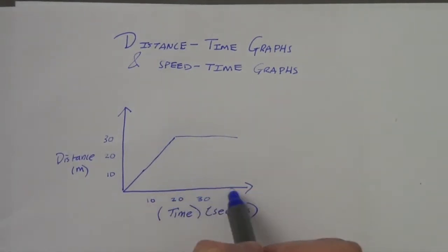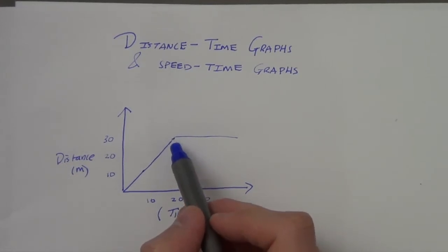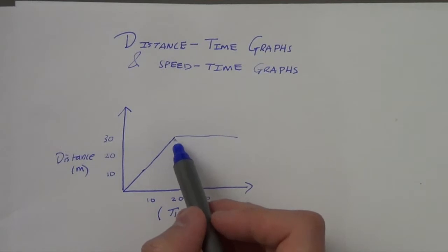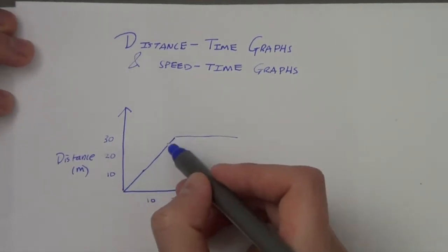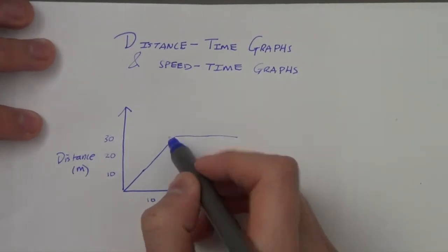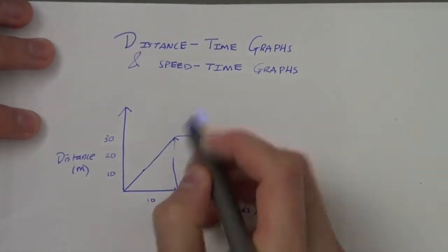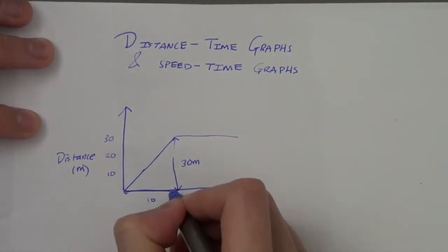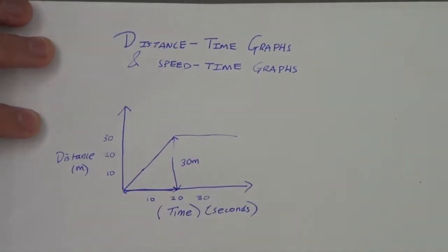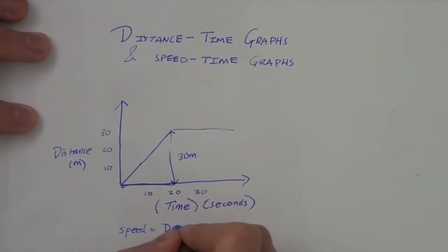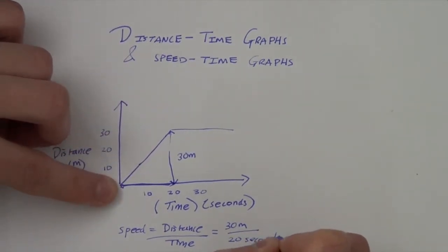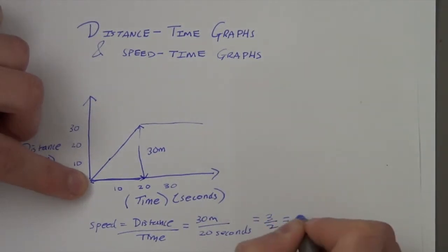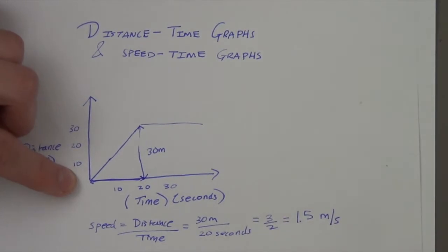From 20 seconds onwards, that bus or person stays at 30 metres. To work out the average speed, I take this distance here — 30 metres — divided by the time, which is 20 minus 0 seconds. So speed equals distance over time: 30 metres over 20 seconds. That is 3 over 2, which is 1.5 metres per second.